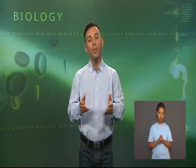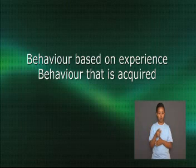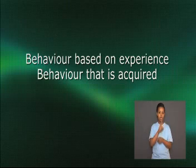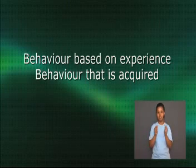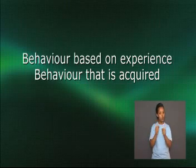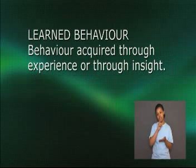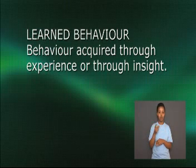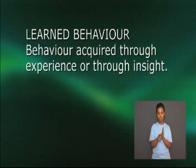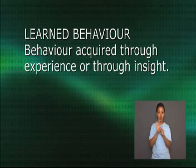Hello again, everyone. I wonder what ideas and examples you thought of. You may have said that learned behavior is an animal's way to respond based on experience. You could have said that learned behavior is a type of behavior animals acquire through experiences. These answers would be correct. A correct example you could have said would be a dog learning how to sit. In your textbooks, learned behavior is defined as behavior that is acquired through experience.